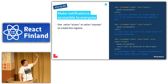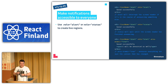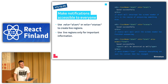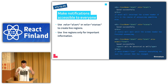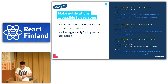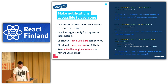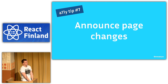Use role='alert' or role='status' to create live regions. The difference: role='alert' interrupts the screen reader immediately, while role='status' waits until it finishes its current announcement — it's more polite. Only use live regions for important information; don't apply them to the body or every component. There are already accessible components available, like the Alert component from Reach UI, and a useful article called 'ARIA Live Regions in React' by Almero Steyn.